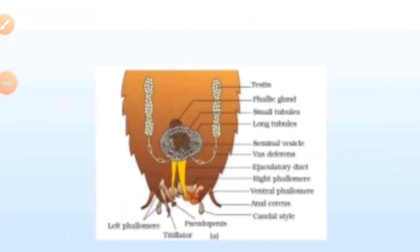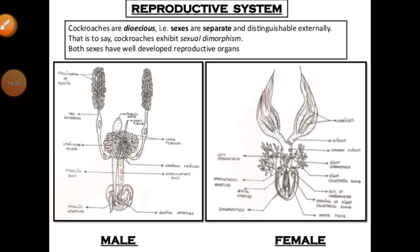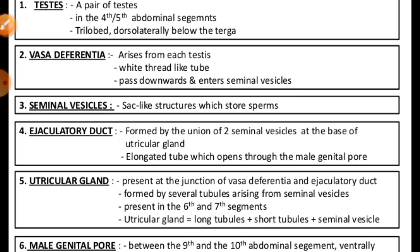The male reproductive system consists of a pair of testes lying one on each lateral side of the four to six abdominal segments. From each testis arises a thin vas deferens which opens into the ejaculatory duct through the seminal vesicle. The ejaculatory duct opens into the male gonopore situated ventral to the anus. A mushroom-shaped gland is present in the sixth to seventh abdominal segment, which functions as the accessory reproductive gland in the cockroach.